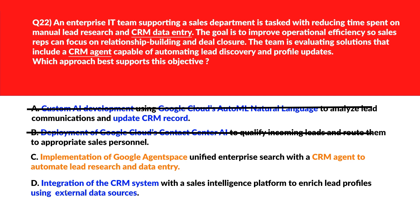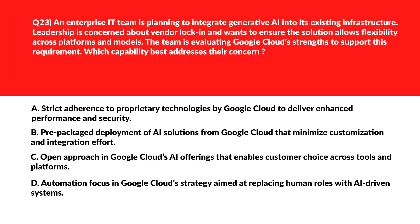Option D says integration of a CRM system with a sales intelligence platform to enrich lead profiles using external data sources. This option addresses the exact pain point by automating lead research and data entry without altering the sales workflow. We'll reject Option D and lock Option C as the right answer.